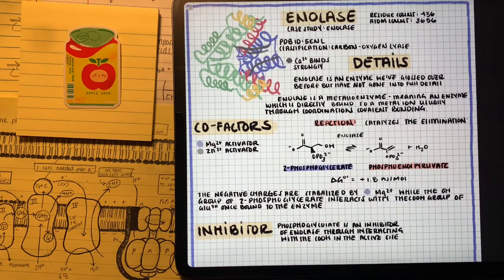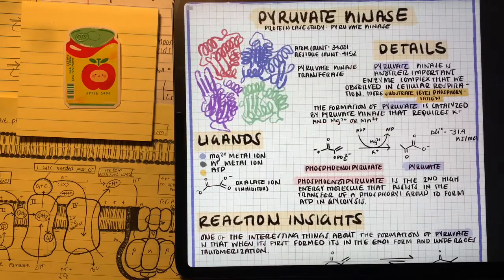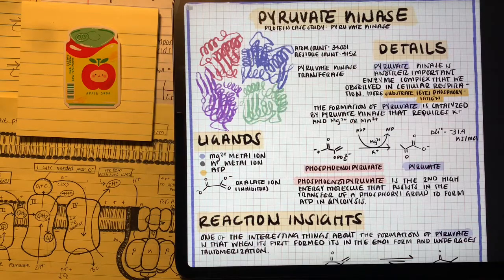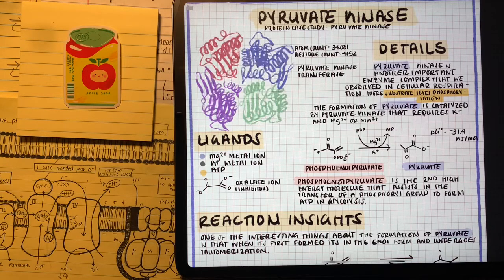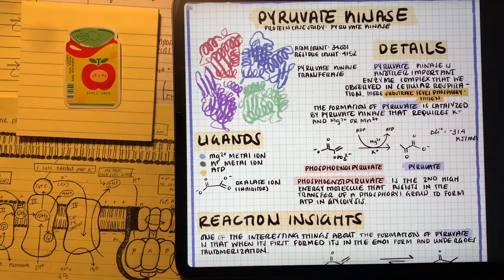So now the next step, we can perform our second substrate-level phosphorylation. The enzyme complex that's going to be responsible or take part in the second substrate-level phosphorylation is going to be pyruvate kinase. This is going to take phosphoenolpyruvate into a substrate-level phosphorylation to form ATP and the product pyruvate.